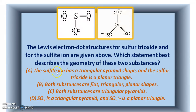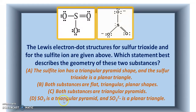A: The sulphide ion has a triangular pyramid shape and the sulphur trioxide is a planar triangle. B: Both substances are flat triangular planar shapes. C: Both substances are triangular pyramids. D: Sulphur trioxide is a triangular pyramid and sulphide ion is a planar triangle.